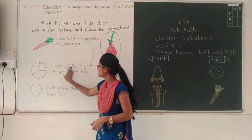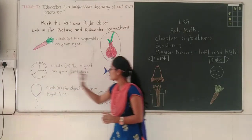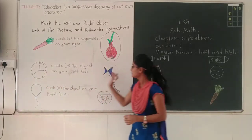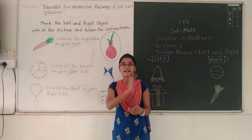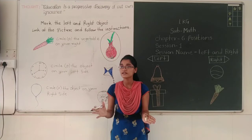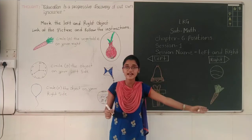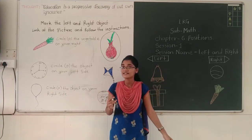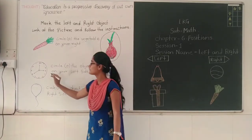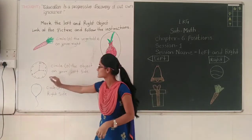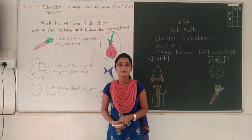Now next: circle the object on your left side. Two objects are here — clock and a type. Tell me which object is on your left side. This is your left side. So you have to circle the left side object. This clock is on your left side, so you have to circle it.